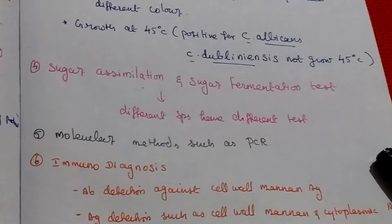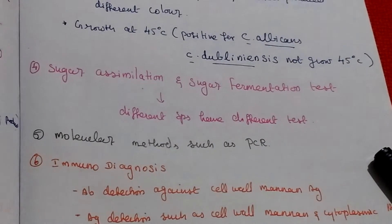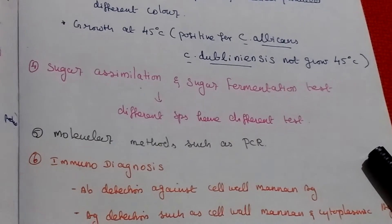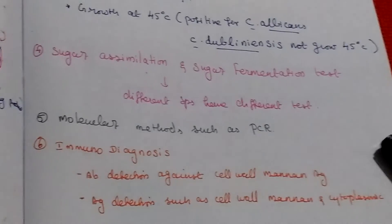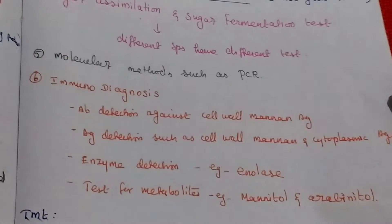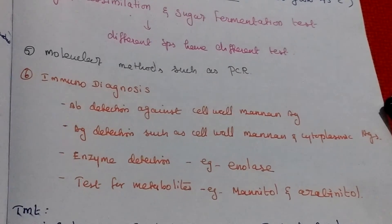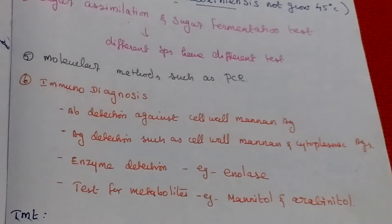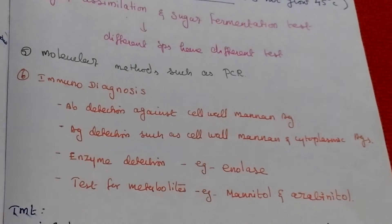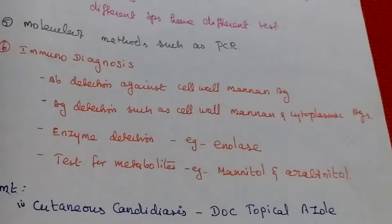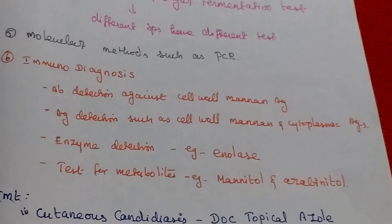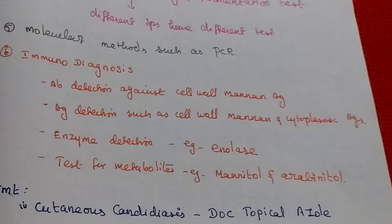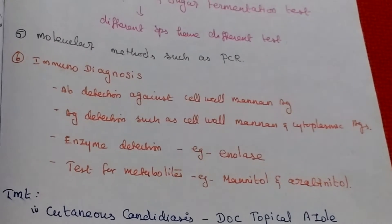Sugar assimilation and sugar fermentation tests are used since different species have different results. Molecular methods such as PCR are also used. Immunodiagnosis includes antibody detection against cell wall mannan antigen, antigen detection such as cell wall mannan and cytoplasmic antigen, enzyme detection such as enolase, and tests for metabolites such as mannitol and arabinitol.